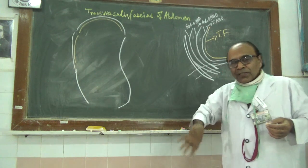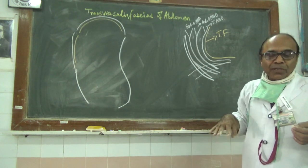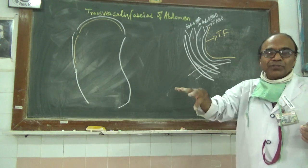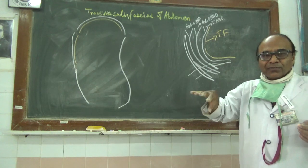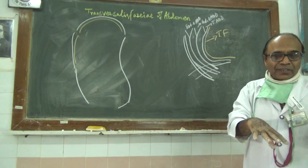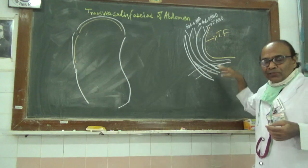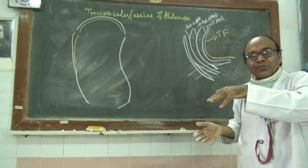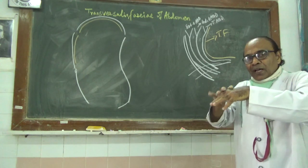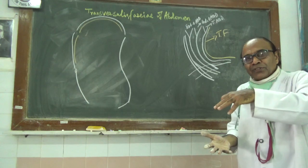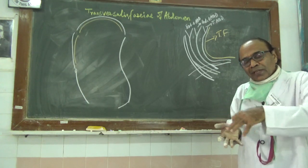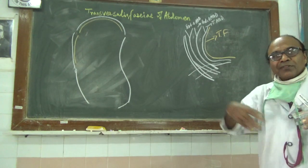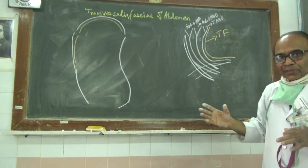It will dip into the pelvic cavity on either side — right and left — where it will reach the fascia iliaca. From anteriorly, the transversalis fascia runs downwards and towards laterally, very close to the back portion of the inguinal ligament. From behind, the fascia comes and joins, running behind the inguinal ligament, forming the femoral sheath.